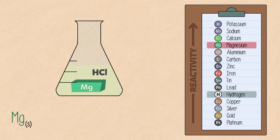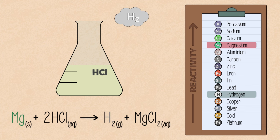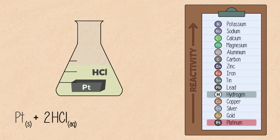Magnesium metal will dissolve in hydrochloric acid, releasing hydrogen gas and forming aqueous magnesium chloride. Since platinum is lower than hydrogen on the series, it will be unreactive in hydrochloric acid.